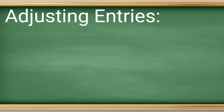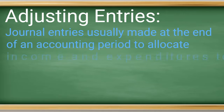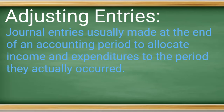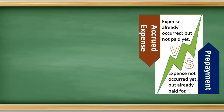Let's start by explaining what are adjusting journal entries. Adjusting entries are defined as journal entries usually made at the end of an accounting period to allocate income and expenditures to the period in which they actually occurred. The two types that are most popular are adjusting entries for prepayments and accruals. Let's look at some easy-to-follow examples to make it clear what exactly we're talking about.